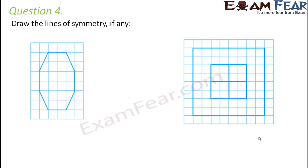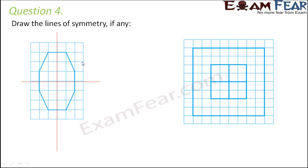Question number four: draw the lines of symmetry if any. The first figure is a polygon with eight sides — an octagon. It has a vertical line of symmetry and a horizontal line of symmetry, since both divide it into equal halves. But it does not have eight lines of symmetry because this is not a regular octagon. Had all eight sides been equal, we would have had eight lines of symmetry; but here we have only two.